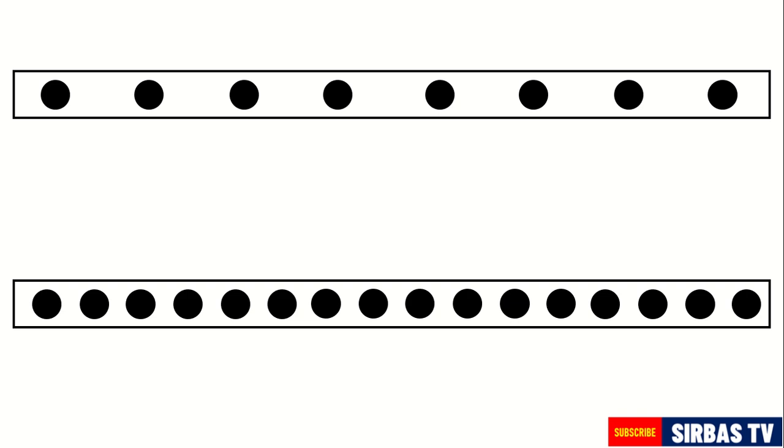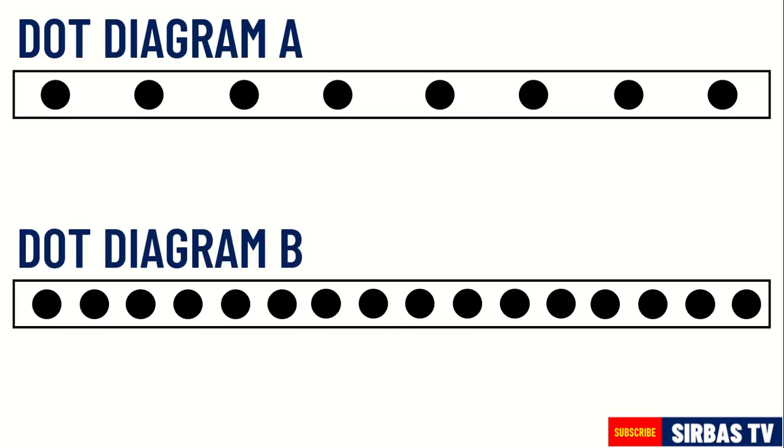What can you observe on the distances of dots on dot diagram A as compared to dot diagram B? Correct! The distance of dots on diagram A has larger distance as compared to the distance of dots on diagram B.